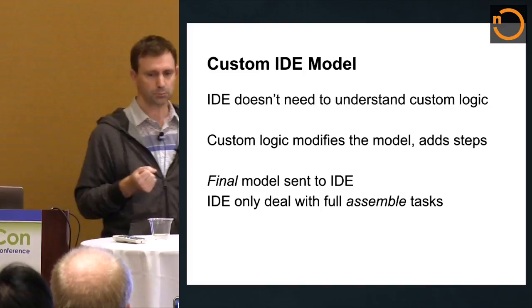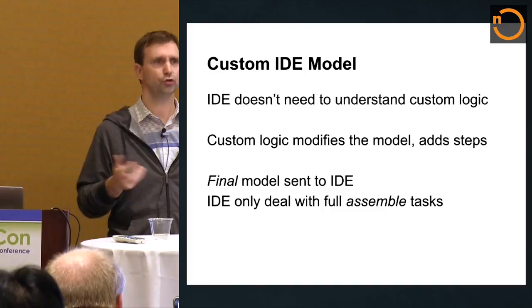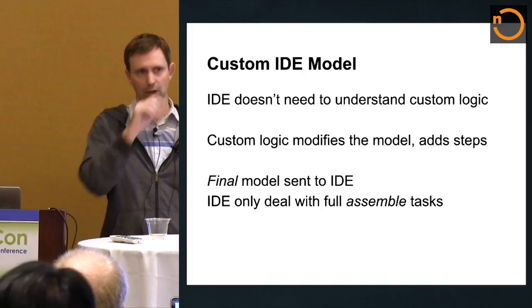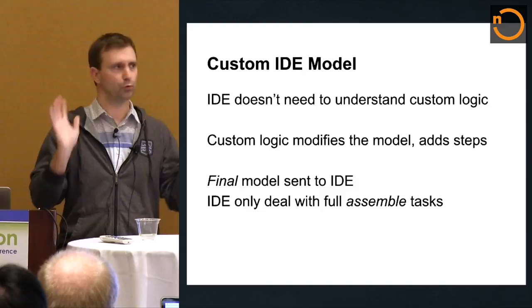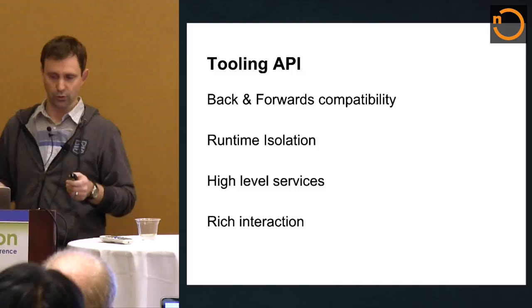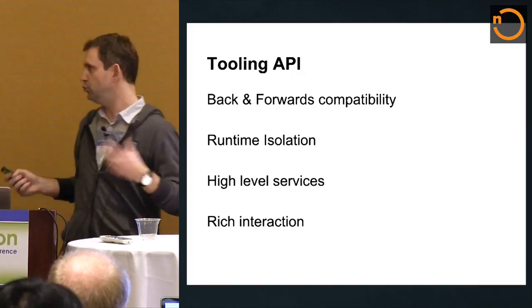All that flexibility is that the API we provide means Studio doesn't need to know about your custom steps. What matters is that your custom logic basically modifies the model that is sent from Gradle to Studio, and then Studio just understands that new model. So if you have custom code to dynamically generate flavors, not a problem. What matters to Studio at the end is all the flavors you generate. We chose Gradle because it offers us the ability to do all of that — the Tooling API was really important.